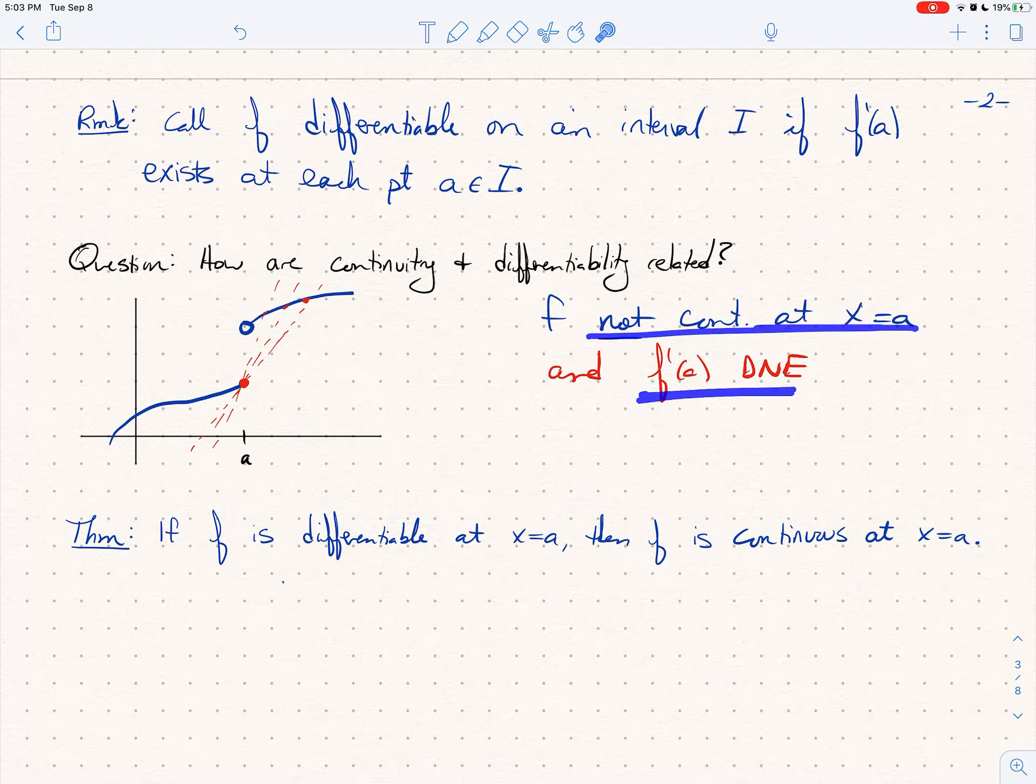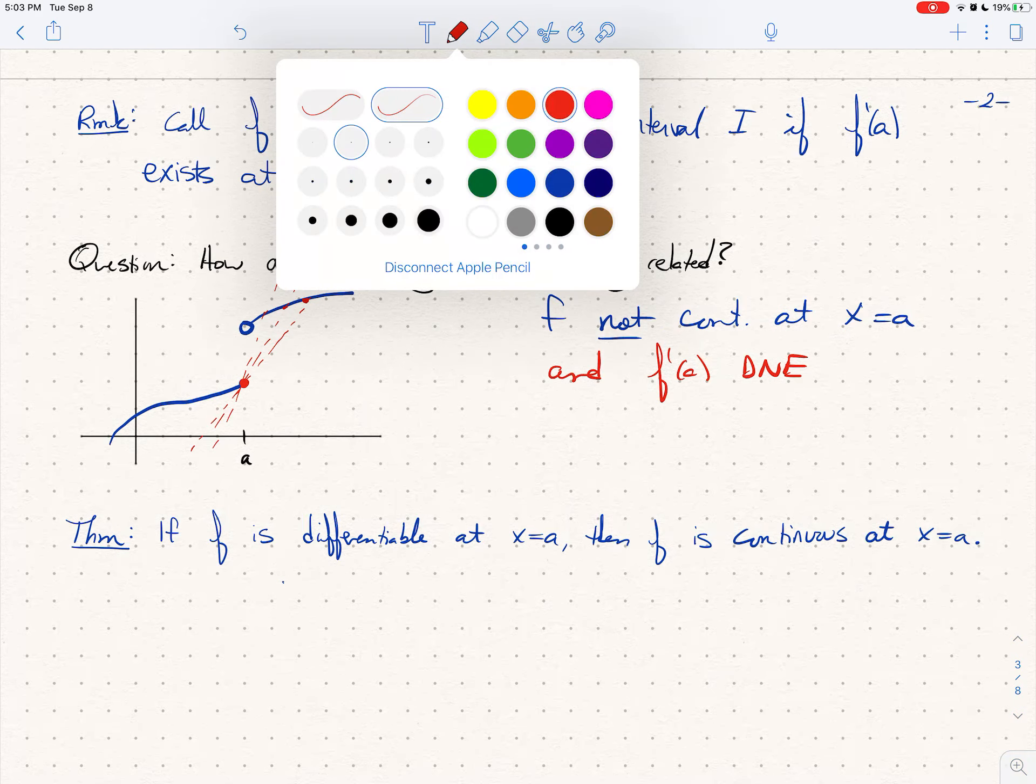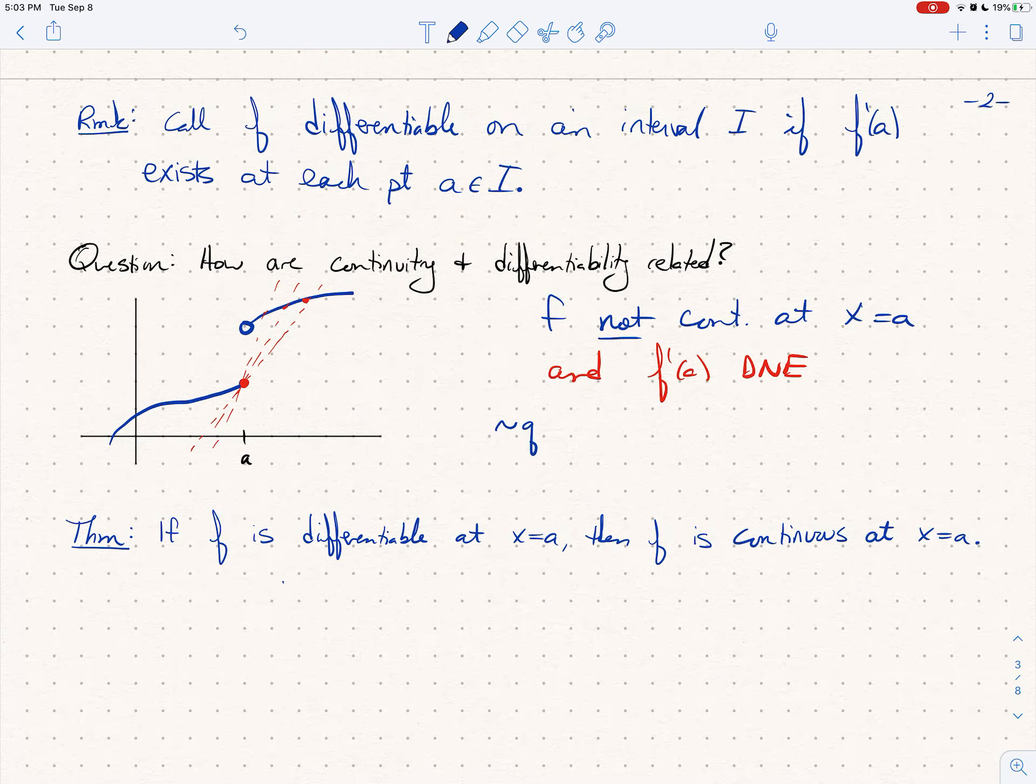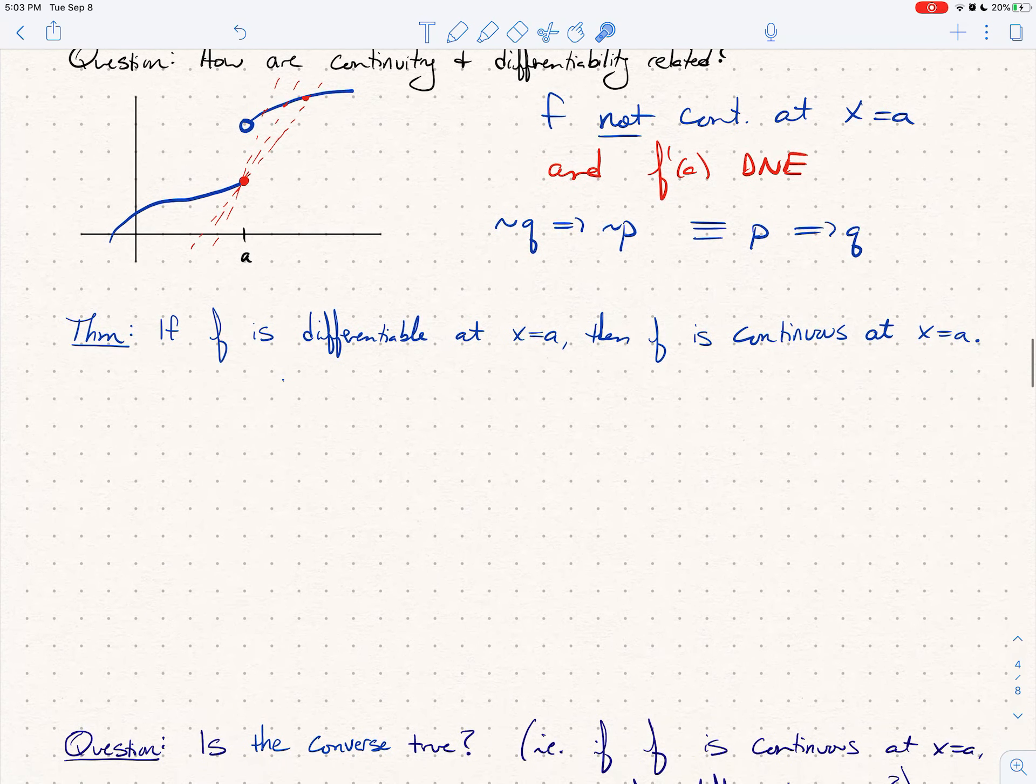And now I want you to think back to discrete, those of you that have had discrete. Not q implies not p is the equivalent to p implies q, so think with me. Not continuous implies no derivative, so not continuous, no derivative is the same thing as saying derivative implies continuous. So that leads us to our theorem.